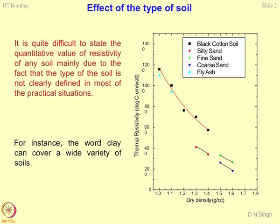If you plot thermal resistivity in units of degree centigrade centimeter per watt on the Y-axis with respect to dry density on the X-axis, the first trend is that as dry density increases, resistivity drops down. This is because of better grain-to-grain contact, which increases due to good compaction or higher dry densities.